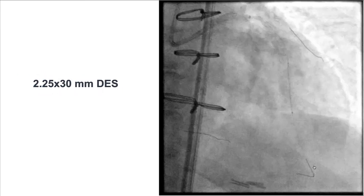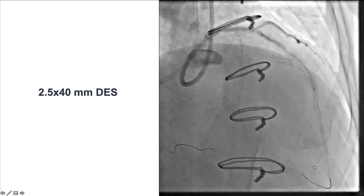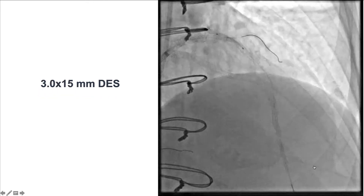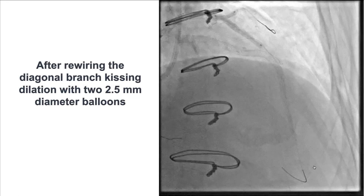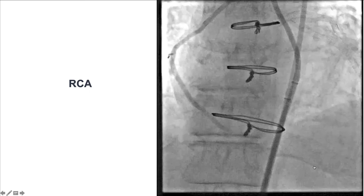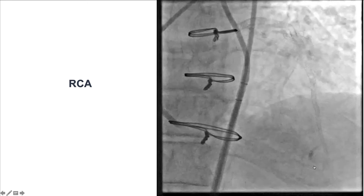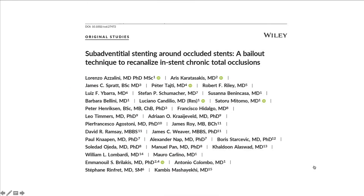We switched for a workhorse wire, performed multiple predilatations, and then stented nearly the entire left anterior descending artery with drug-eluting stents. We wanted to protect the diagonal, so we rewired and performed a kissing balloon inflation. The right coronary graft did not have any issues during the procedure. There is a study from Lorenzo Zellini on subadventitial stenting around occluded stents, which is exactly what we did in this case.